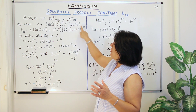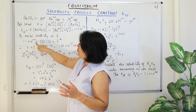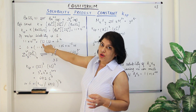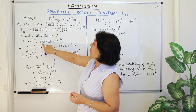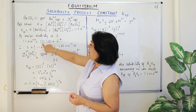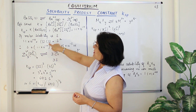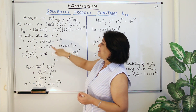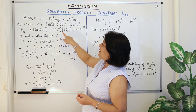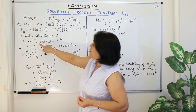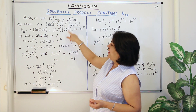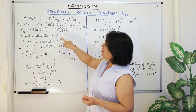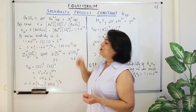So let us put this value in. KSP equals the barium ion concentration in terms of solubility — in moles per litre — which is S, times the sulphate ion concentration, also S. Since there is one mole of barium and one mole of sulphate, we substitute both as S. S times S gives us S squared. So 1.1 × 10⁻¹⁰ equals S².